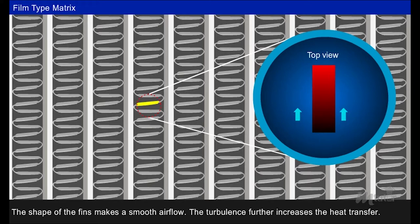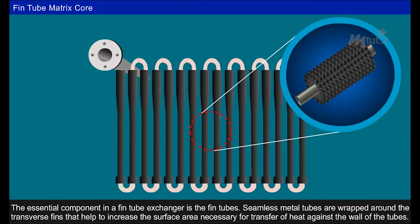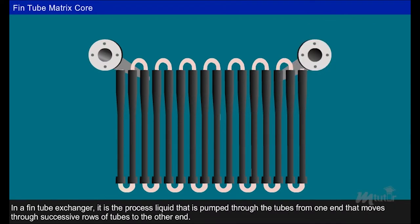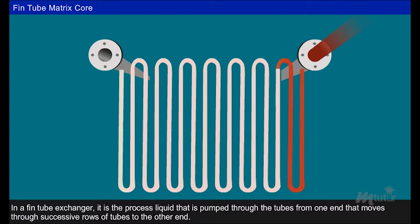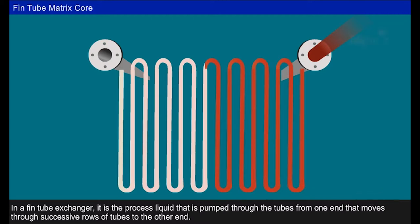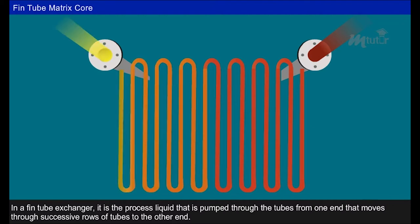The essential component in a fin tube exchanger is the fin tubes. Seamless metal tubes are wrapped around the transverse fins that help to increase the surface area necessary for transfer of heat against the wall of the tubes. In a fin tube exchanger, process liquid is pumped through the tubes from one end that moves through successive rows of tubes to the other end.